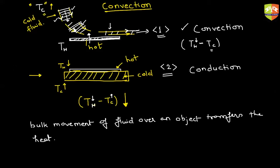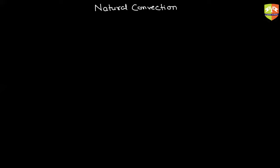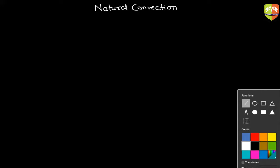In our syllabus, we don't have an extensive study of convection — just a few examples. If your school exam asks you to give an example of convection, you need to talk about natural convection. Natural convection is a process due to which convection currents flow naturally. Let's see how it happens.